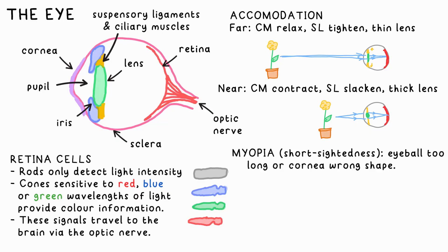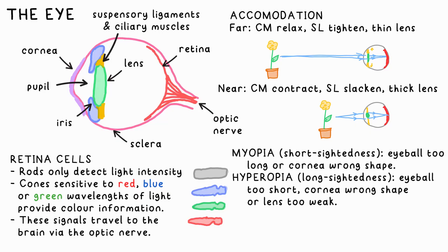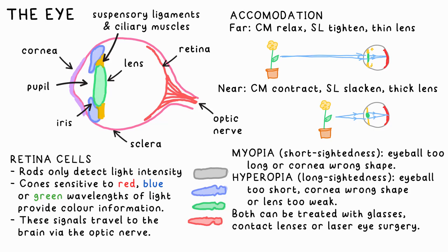Myopia is the medical term for short-sightedness — you can't focus on far objects. Hyperopia is long-sightedness, the opposite. Glasses or contact lenses are usually used to mitigate this by slightly converging or diverging the light before it enters the eye. Laser eye surgery changes the shape of the cornea to achieve the same effect.